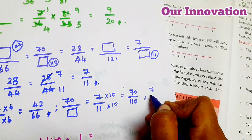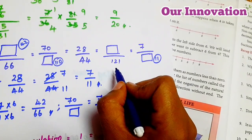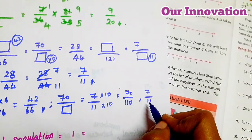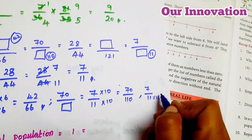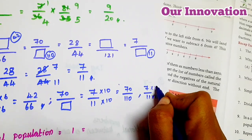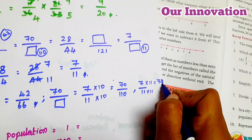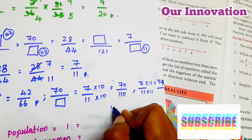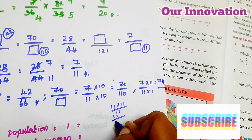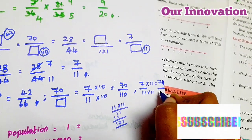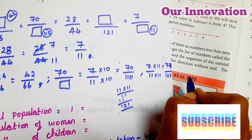7/11. Students, you see, this is 121. So 11 × 11 = 121. What is the number we find?